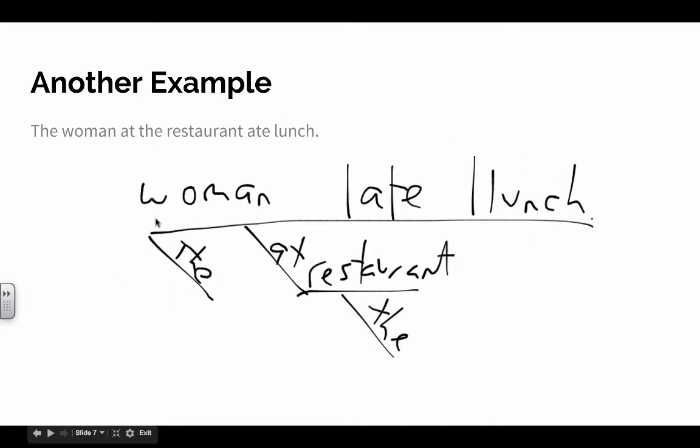But then the is modifying woman. When it comes to the preposition, at is the preposition, and then restaurant, here is the horizontal line. Now, the, of course, is modifying restaurant.